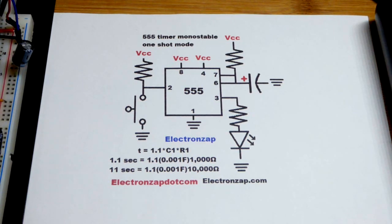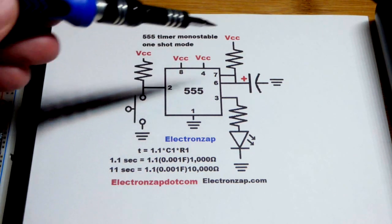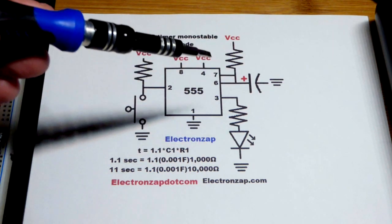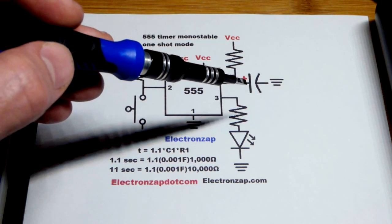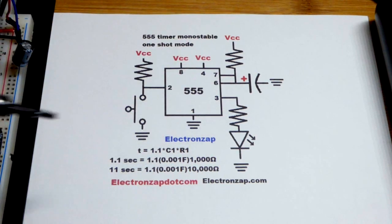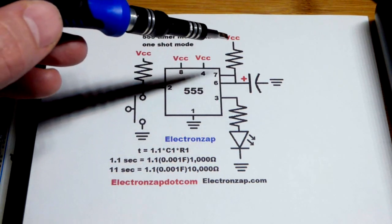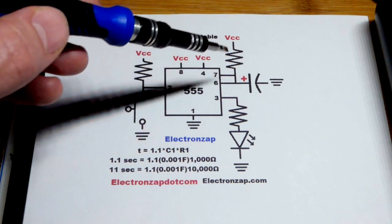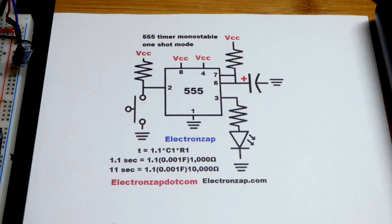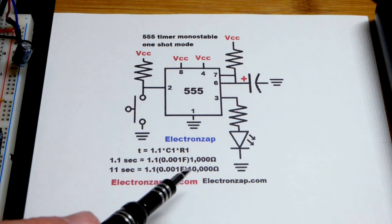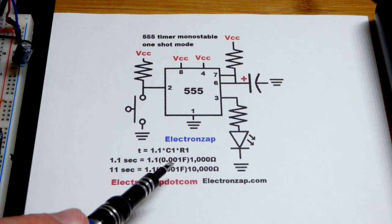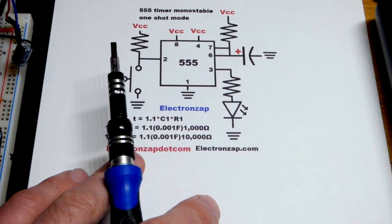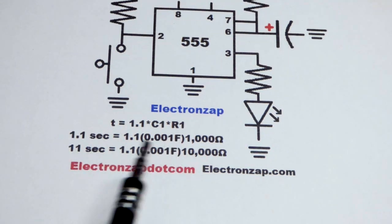The timing is set when you press the button. Current starts filling the capacitor, so a higher value resistor will limit the current more and it will take longer. A larger value capacitor will also take longer, so you use lower values to go quicker. Remember this connects directly to ground when the output is low, so use a high enough value resistor to protect that. I'm going to use a 1000 ohm resistor and a 1000 microfarad (0.01 farad, one millifarad) capacitor for the timing.